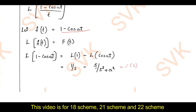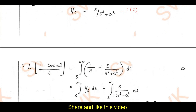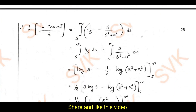Applying the property, the Laplace of (1 − cos(at))/t equals the integral from s to ∞ of [1/s − s/(s² + a²)] ds. We integrate the two terms separately, using the standard results: integral of 1/x is log x, and integral of f′(x)/f(x) is log f(x).